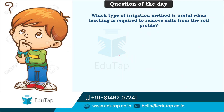The question of the day: which type of irrigation method is useful when leaching is required to remove salts from the soil profile? There are various types of irrigation methods, but for soils where high levels of salts are present, leaching can help remove them. Of all the types of irrigation methods, there is one particular type that is highly useful when leaching needs to be done to remove salts from the soil profile — what is that method?